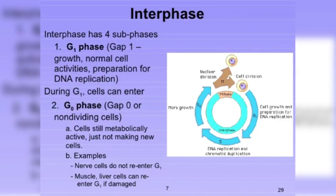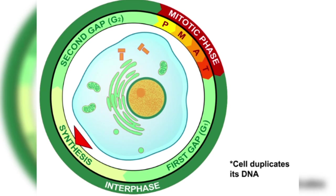It lasts for about 90 to 96% of the cell cycle. Howard and Pell classified Interphase into three sub-phases on the basis of synthetic activities: G1 Phase, Gap 1, post-mitotic, pre-synthetic, first growth phase; S-Phase, synthetic phase; and G2 Phase, Gap 2, post-synthetic, pre-mitotic, second growth phase.